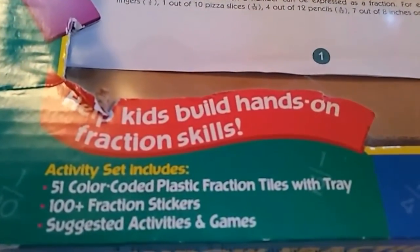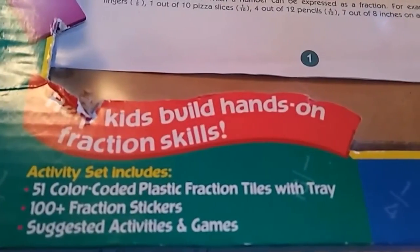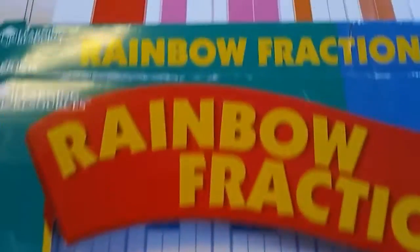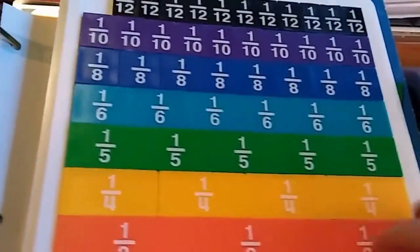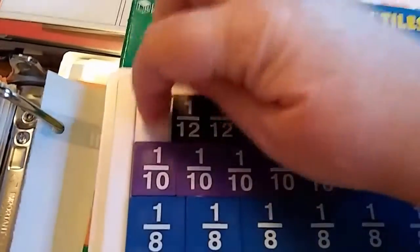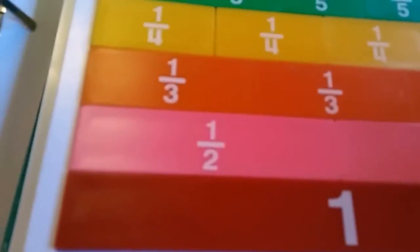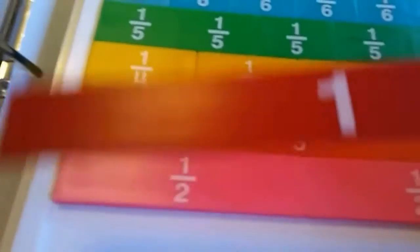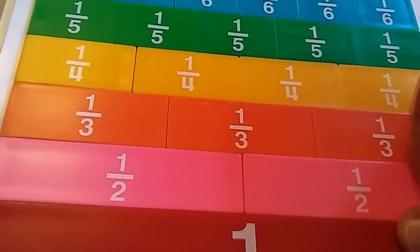It includes 51 color-coded plastic fraction tiles with the tray, 100 fraction stickers, and suggested activities and games. I highly suggest this one and the foam circles. This is a good solid sturdy tray that they all fit in. Then you can talk a lot about equivalent fractions with this. It starts out with one solid piece and they're all colored so that the pieces you can easily put away in their sections.